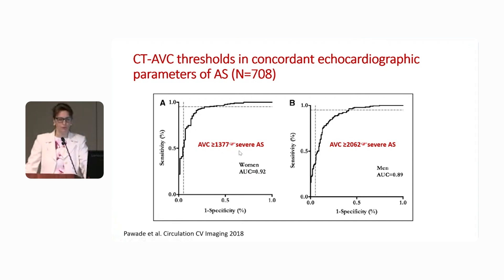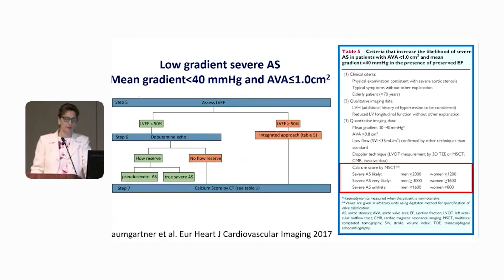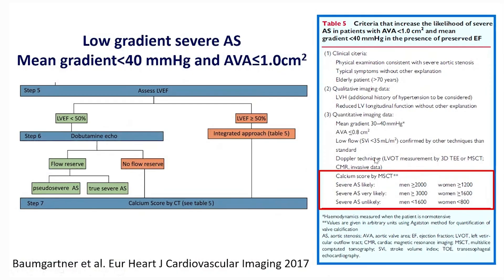These cut-off values were quite similar to those proposed by Philippo, and this led to the algorithm that the European guidelines use to assess patients with severe aortic stenosis. The first step of that algorithm is to look at the valve — we must not forget to look at whether it opens or not.